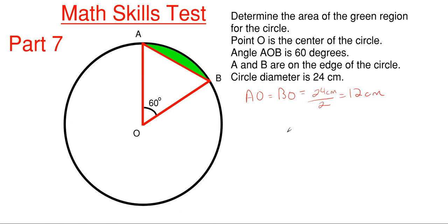Since this is 12 and this is 12 and that angle between those two is 60 degrees, whenever you have two legs that are equal and an angle between them is 60 degrees for a triangle, what that means is that you're dealing with an equilateral triangle. That means that all sides are equal and all angles are 60 degrees.